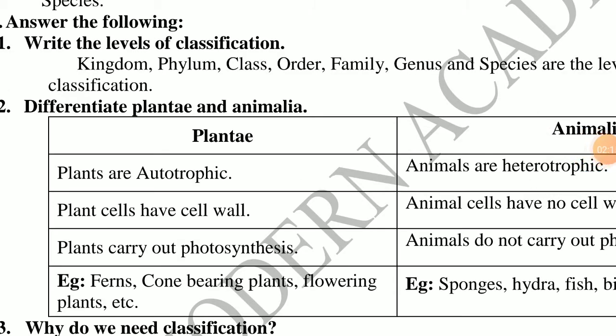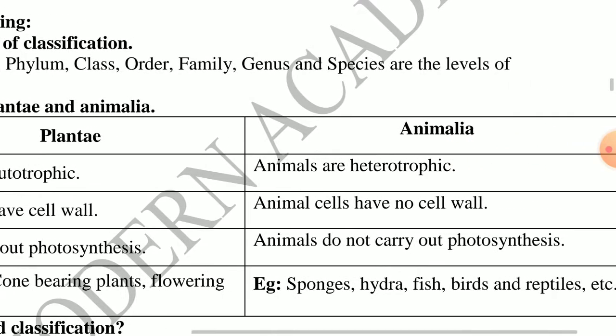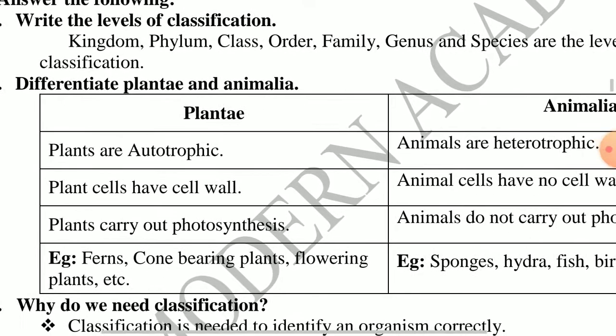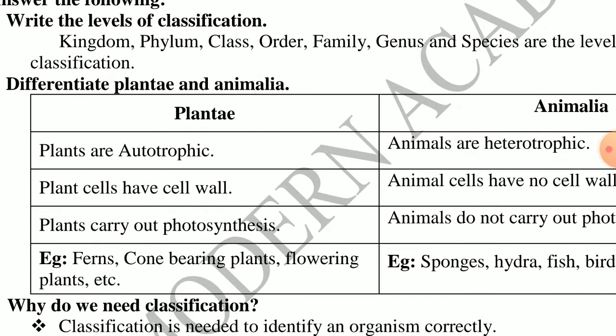Day 2 material reading. First question: write the levels of classification. Kingdom, phylum, class, order, family, genus, and species are the seven levels of classification. The topmost position is kingdom; the last position is species.